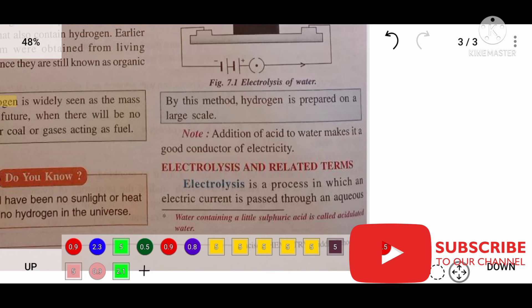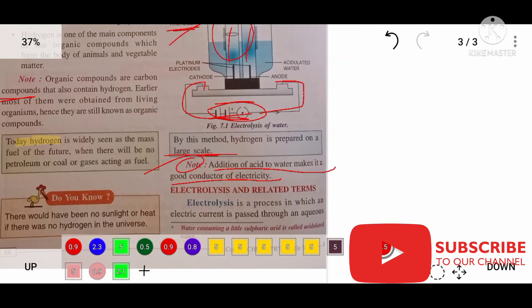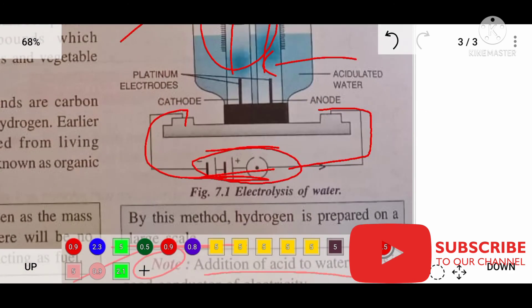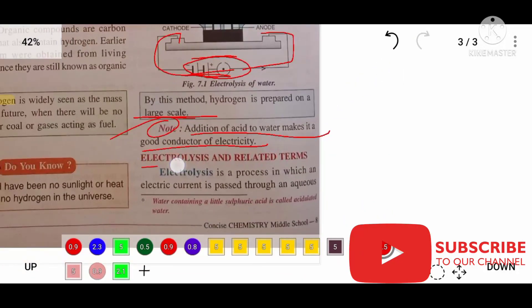This method of hydrogen preparation is used on a large scale, meaning we can prepare a lot. Addition of acid to water makes it a good conductor of electricity. I'm going to stop here. I'm going to continue with electrolysis and related terms in the next part. Like, share, and subscribe to our channel.